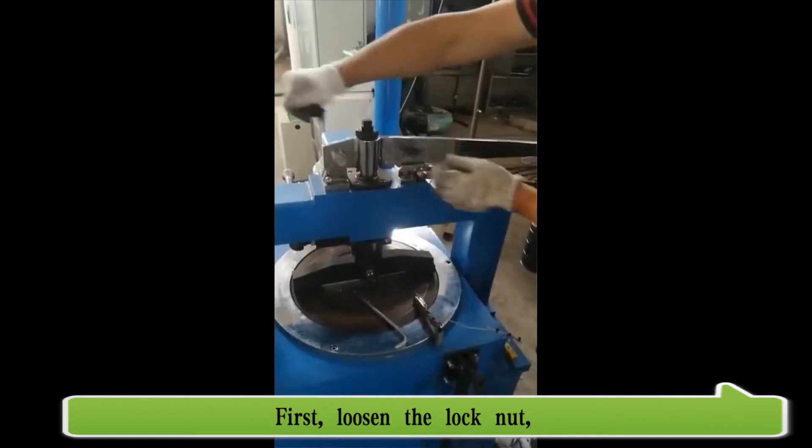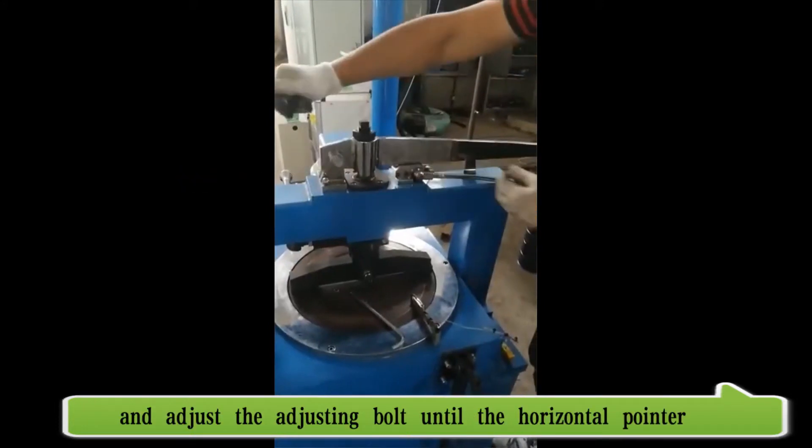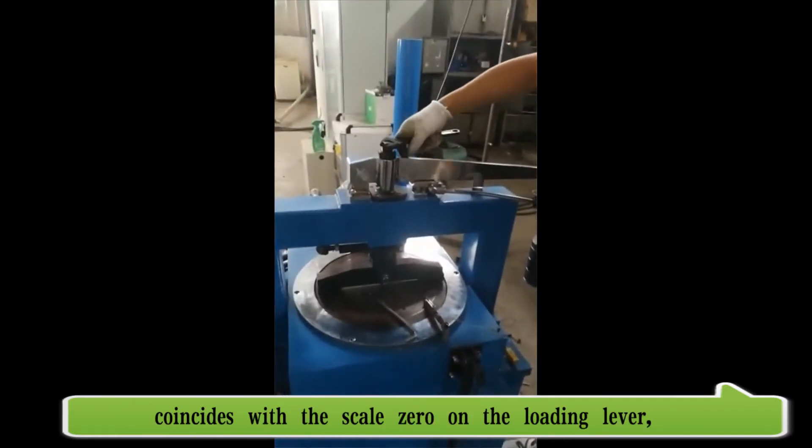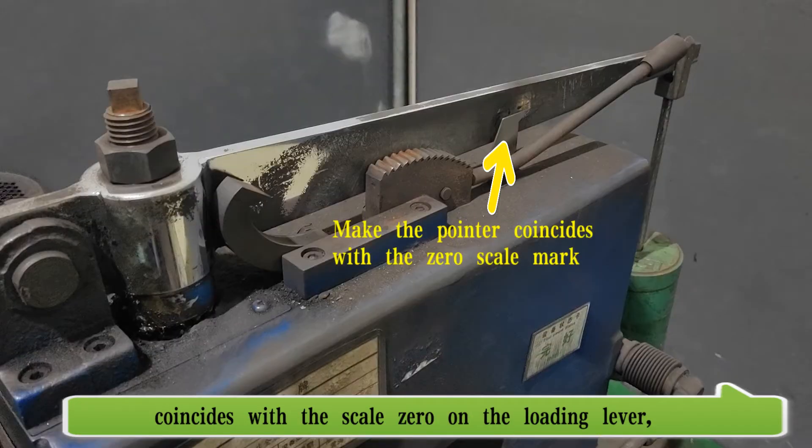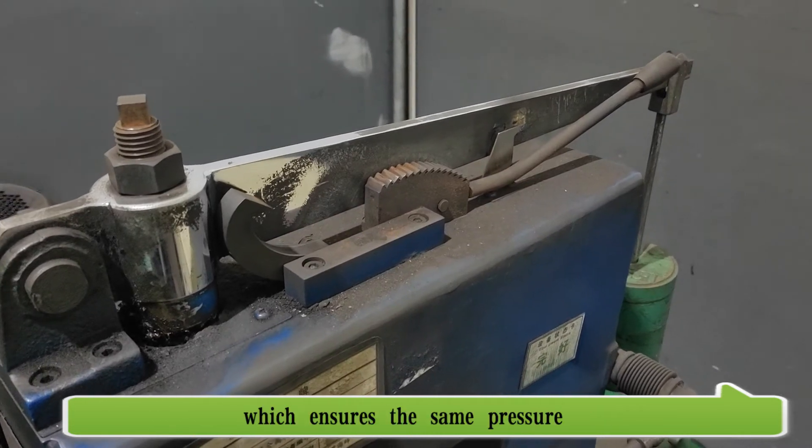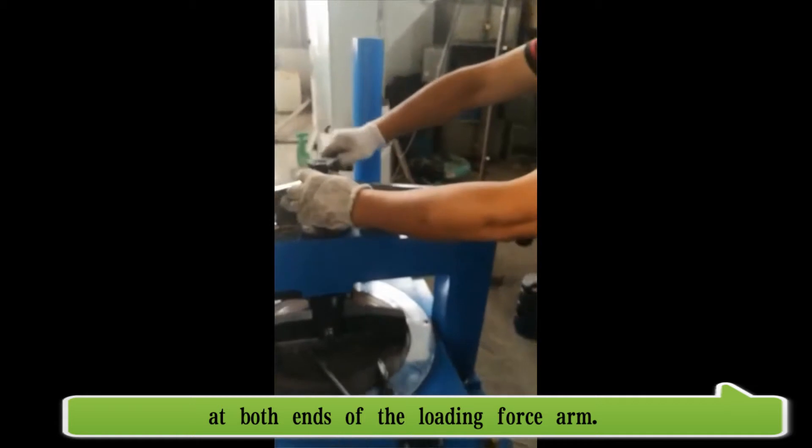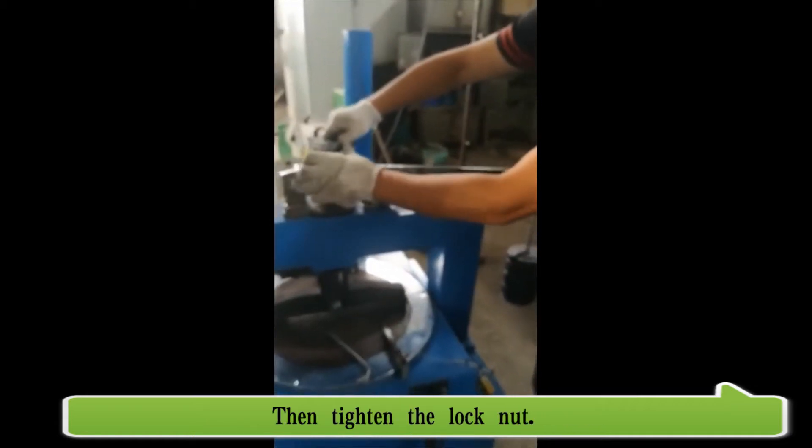First, loosen the lock nut and adjust the adjusting bolt until the horizontal pointer coincides with the scale 0 on the loading lever, which ensures the same pressure at both ends of the loading force arm, then tighten the lock nut.